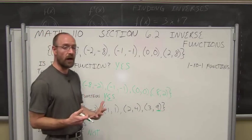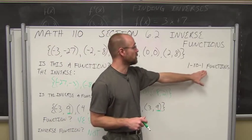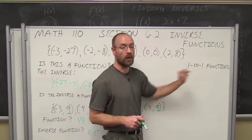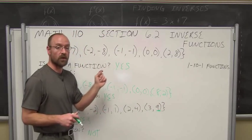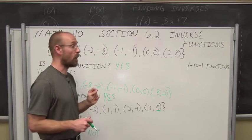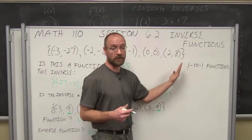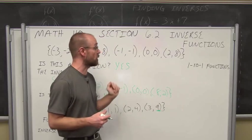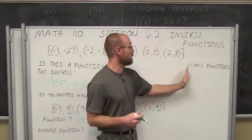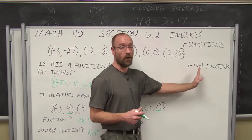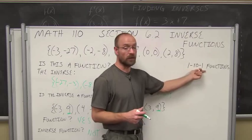Essentially, what we want to define in order to find the inverse of a function is that it must be a one-to-one function — meaning each x value corresponds to a unique y value. We'll look at a test called the horizontal line test. For each x there is a unique y, and for each y there is a unique x. So we see that would be a one-to-one function.